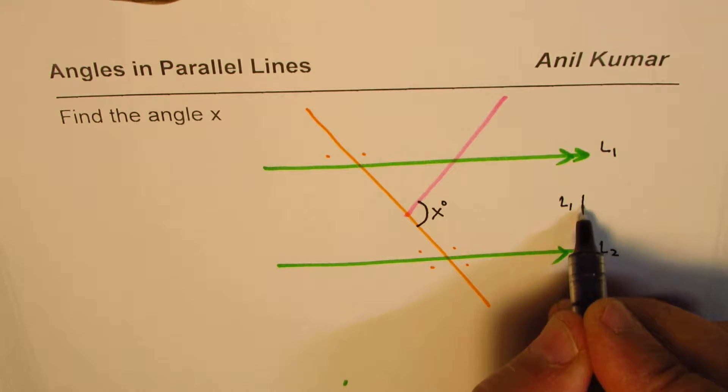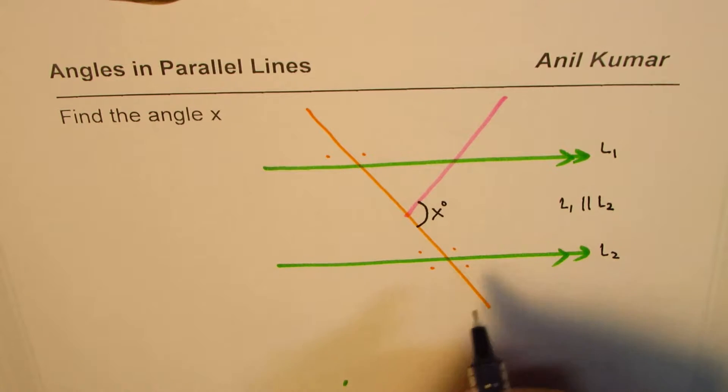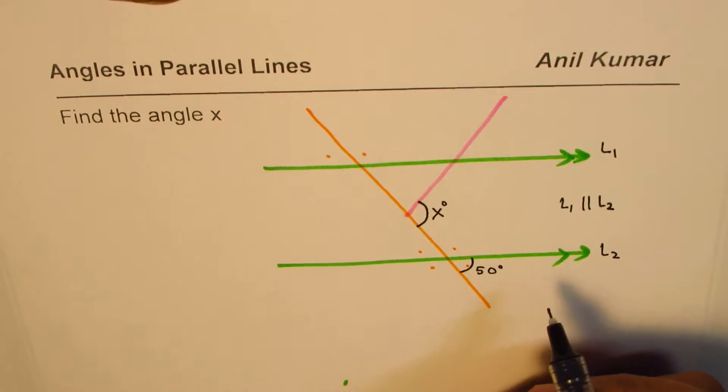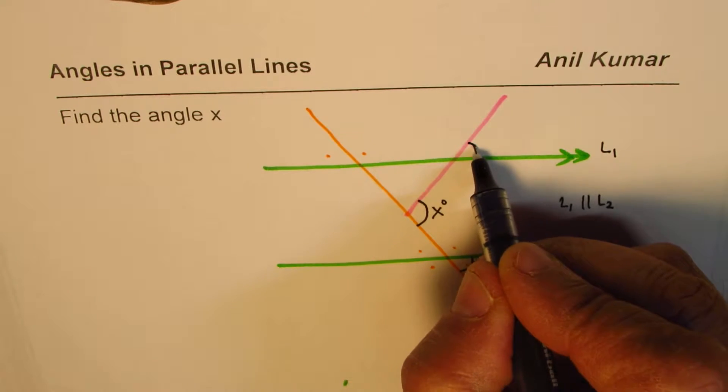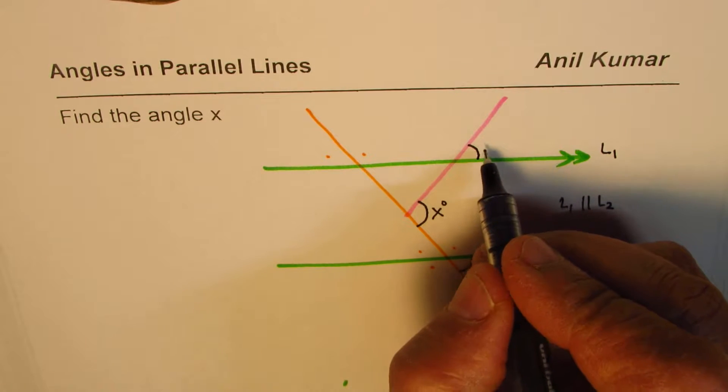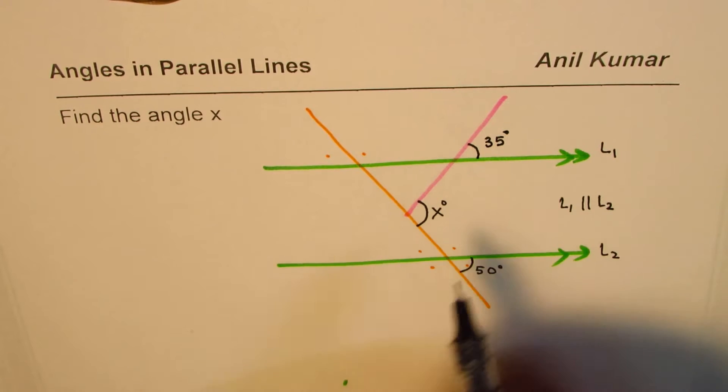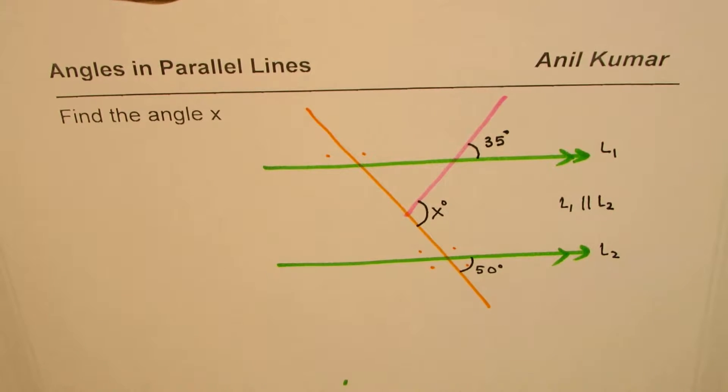Let's take some example. Let's take one angle somewhere and let's say this angle is 50 degrees. And let me take one angle on this side also that will help us to calculate this value of X. So let's say this angle is 35 degrees. Now in that case you have to tell me what should be the angle X.